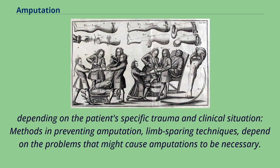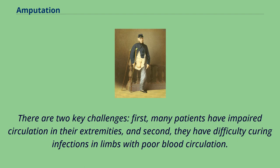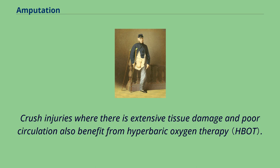Depending on the patient's specific trauma and clinical situation, methods in preventing amputation and limb-sparing techniques depend on the problems that might cause amputations to be necessary. Chronic infections, often caused by diabetes or decubitus ulcers in bedridden patients, are common causes of infections that lead to gangrene, which would then necessitate amputation. There are two key challenges: first, many patients have impaired circulation in their extremities, and second, they have difficulty curing infections in limbs with poor blood circulation. Crush injuries where there is extensive tissue damage and poor circulation also benefit from hyperbaric oxygen therapy.